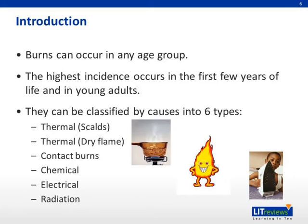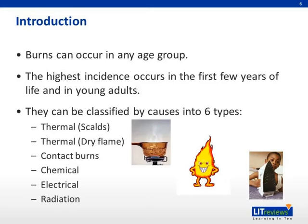Introduction. Burns can occur in any age group, in particular the first few years of life and those aged 20 to 29 years. Serious burn injuries occur most frequently in males. They can be classified into six different types based on the mechanism, such as scalds, fire, contact burns, chemical, as well as electrical and radiation. The mechanism varies with the age group, and today we will be concentrating on those due to scalds, fire, and contact.